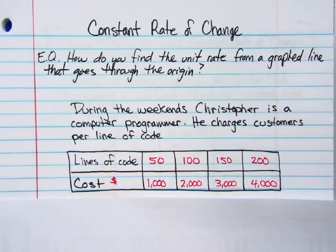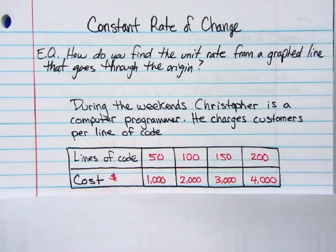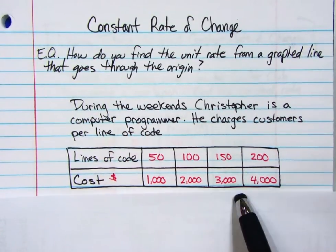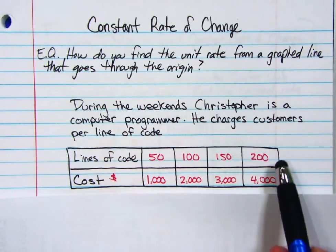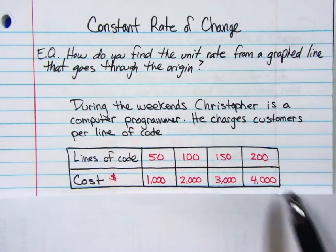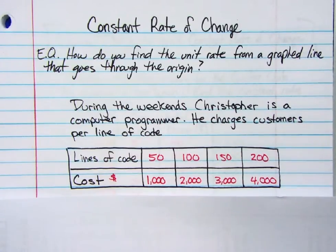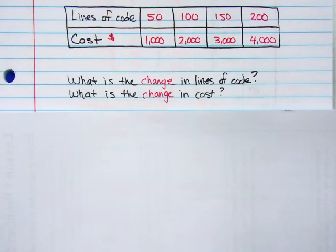So for 50 lines of code, he charges $1,000. 100 lines of code, $2,000. 150 lines of code, $3,000. And for 200 lines of code, $4,000.